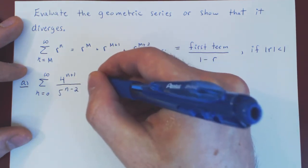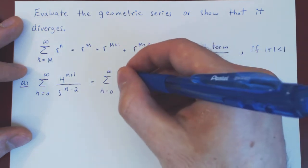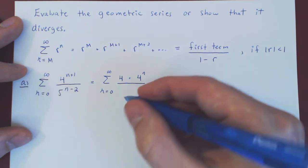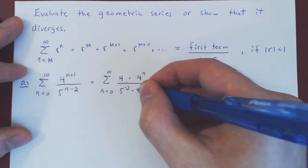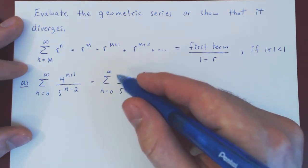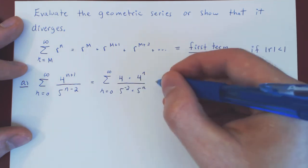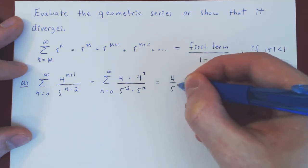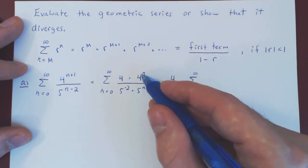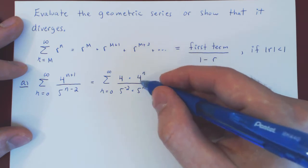We can split those up quite easily. 4 to the n+1 is 4 times 4 to the n. 5 to the n−2 is 5 to the negative 2, times 5 to the n. We can factor the constant expression out of the sum with respect to n. So we have 4 over 5 to the negative 2, times the sum from 0 to infinity. Now both 4 and 5 are to the nth power, so we can combine them under a single exponent of n, giving us 4 over 5.